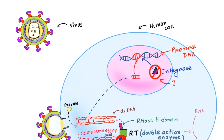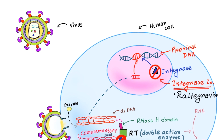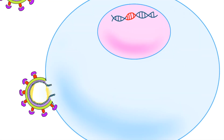The next group of drugs blocks the integrase enzyme, preventing viral DNA from integrating into our DNA molecule. They are called integrase inhibitors. Raltegravir is an example of an integrase inhibitor.